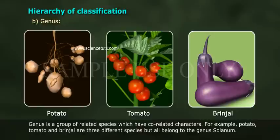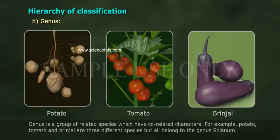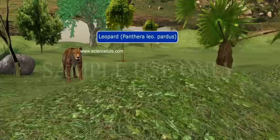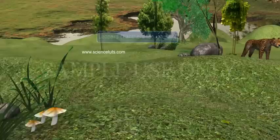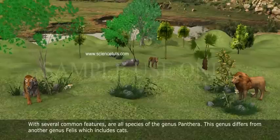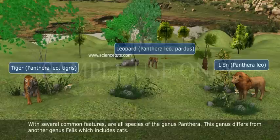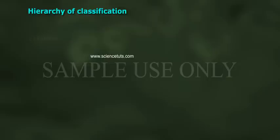tomato and brinjal are three different species but all belong to the genus Solanum. Lion (Panthera leo), Leopard (Panthera pardus) and Tiger (Panthera tigris) with several common features are all species of the genus Panthera. This genus differs from another genus, Felis, which includes cats.